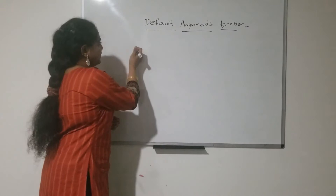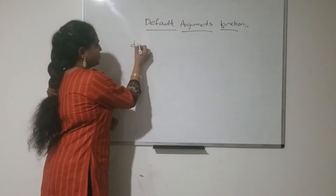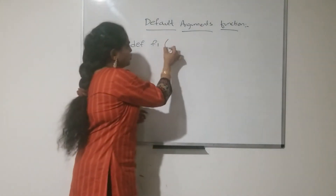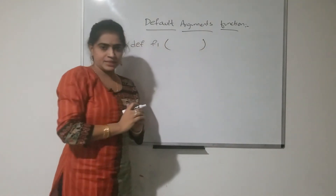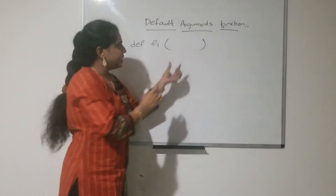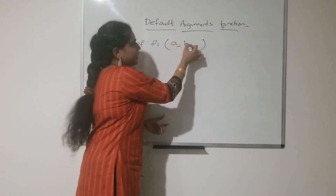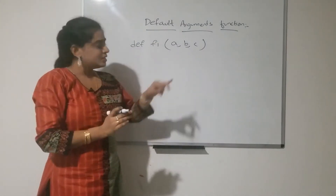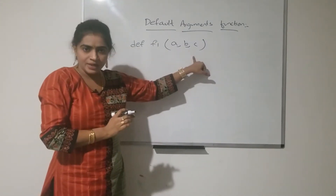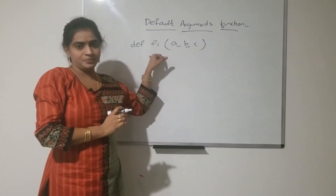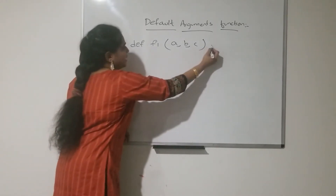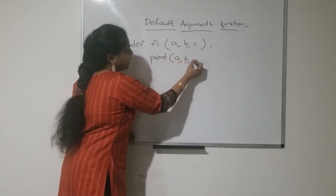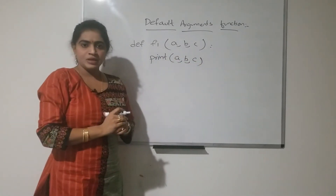Within a function definition, suppose for example def f1 — this is my function. Here you will pass some parameters. These parameters are input to this function — they are formal parameters. For example, here I am going to print the values of a, b, and c.